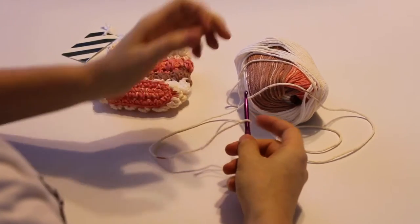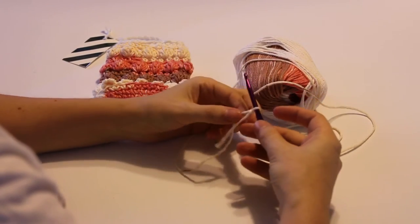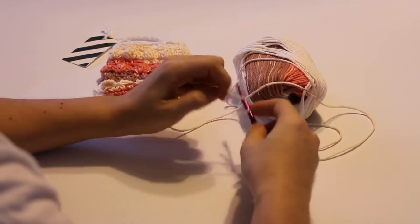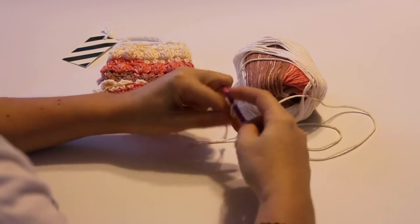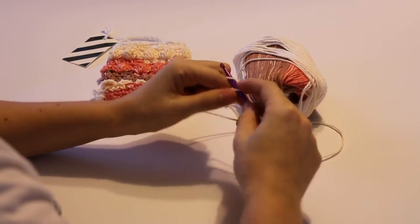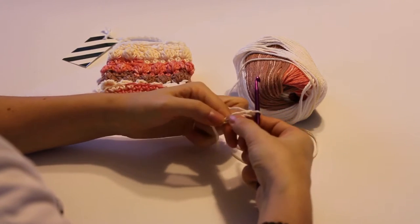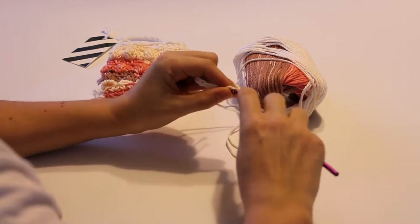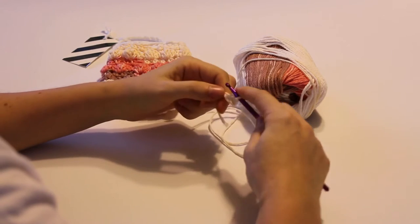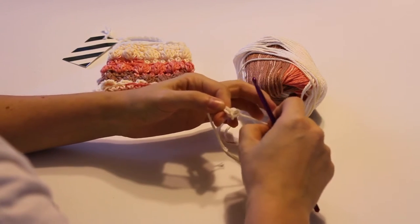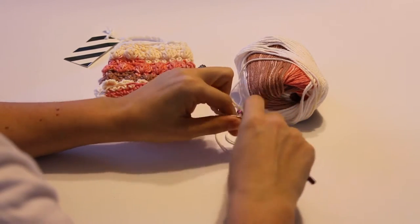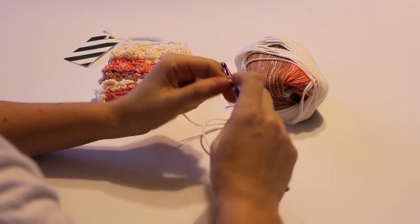Alright, so I've already got my yarn, I've already got my slipknot done. So again, you're going to go ahead and start with a chain eight. We are going to start working the bottom of the Soap Saver first. So chain eight, seven and eight. And in the second chain from the hook, you're going to start with two single crochets.